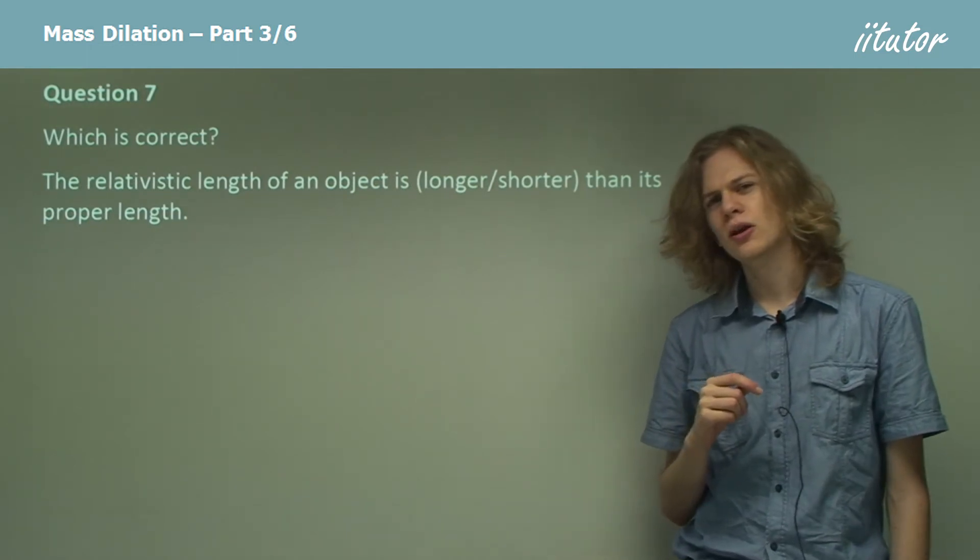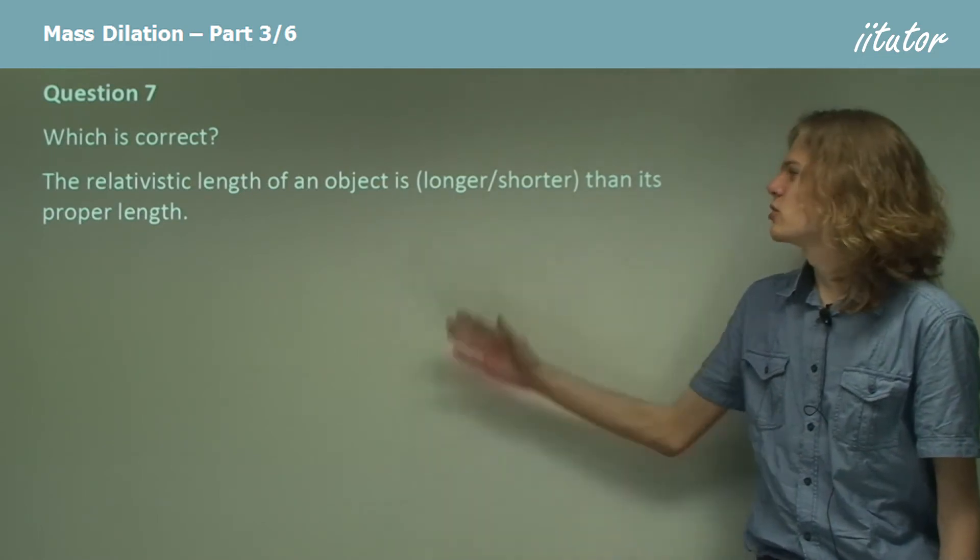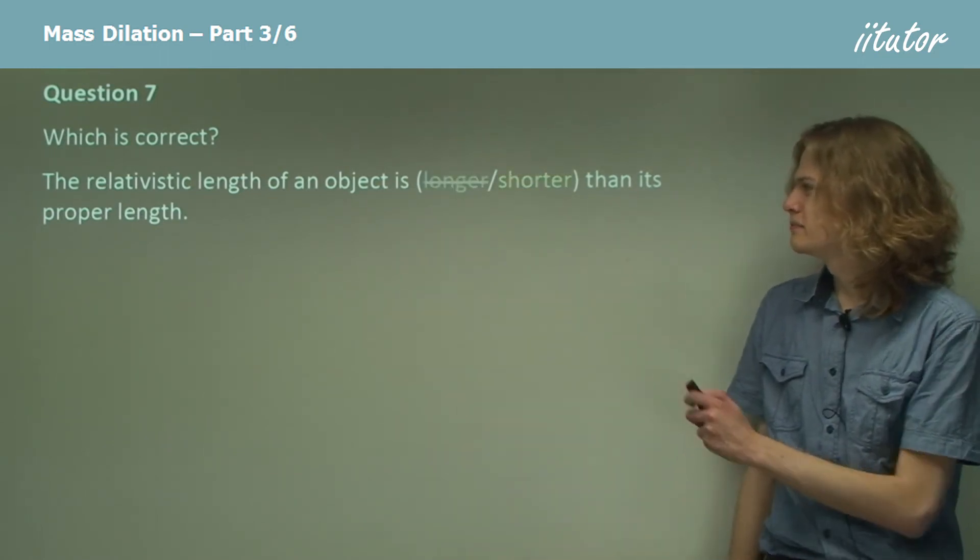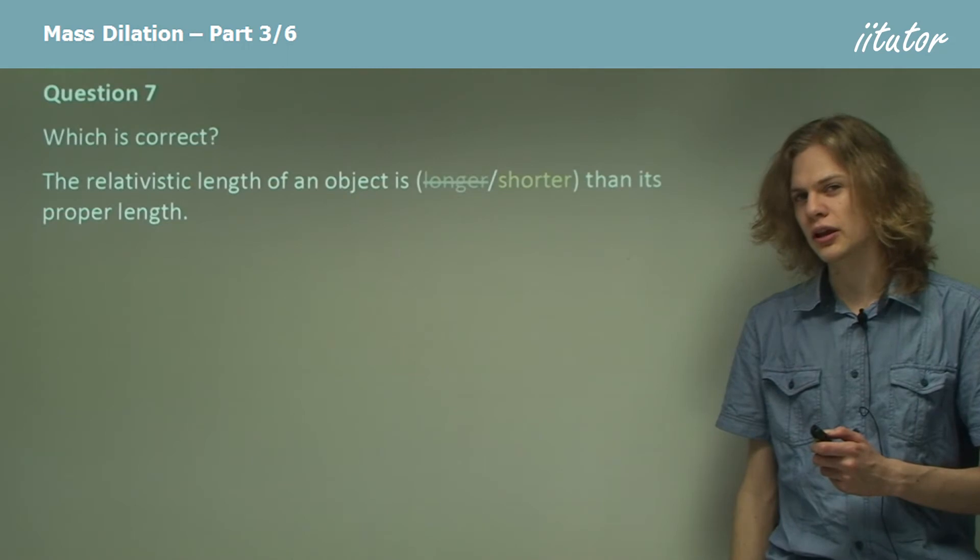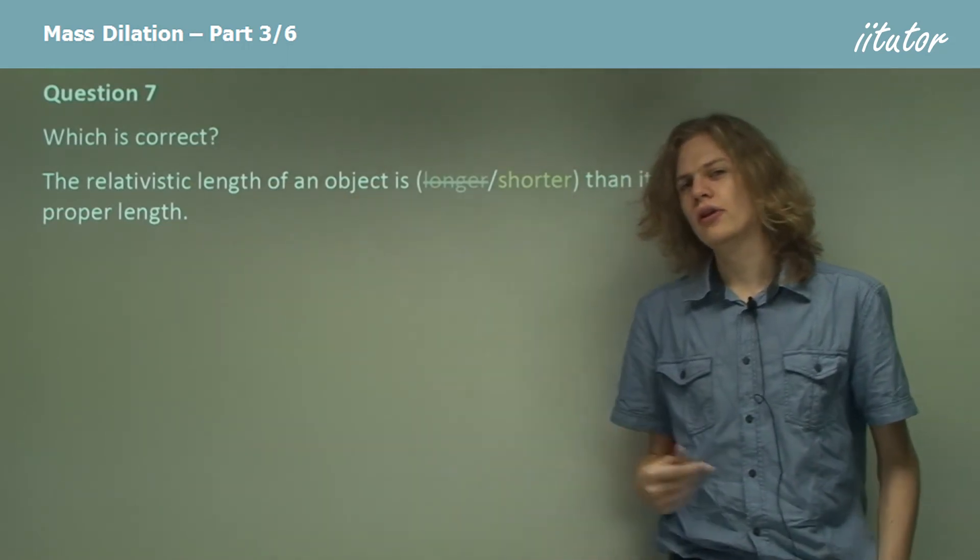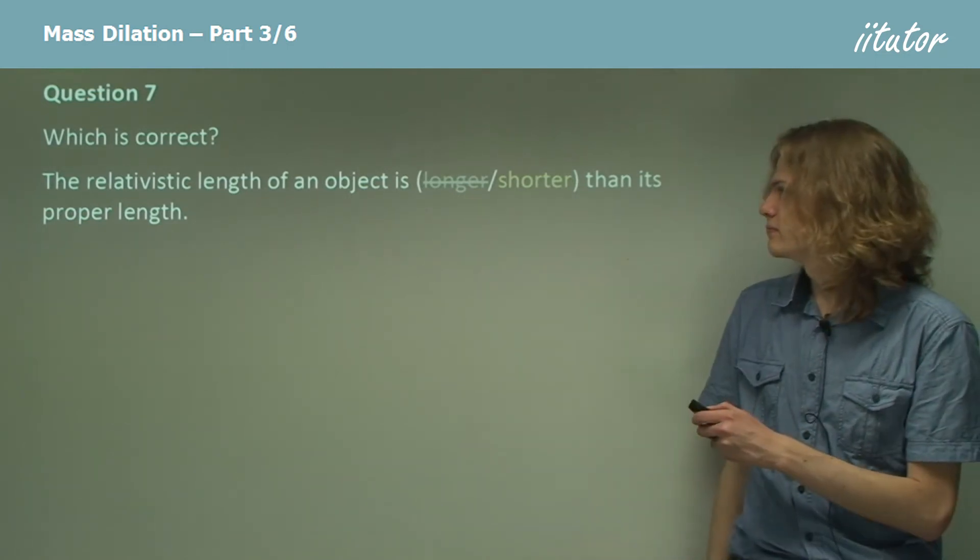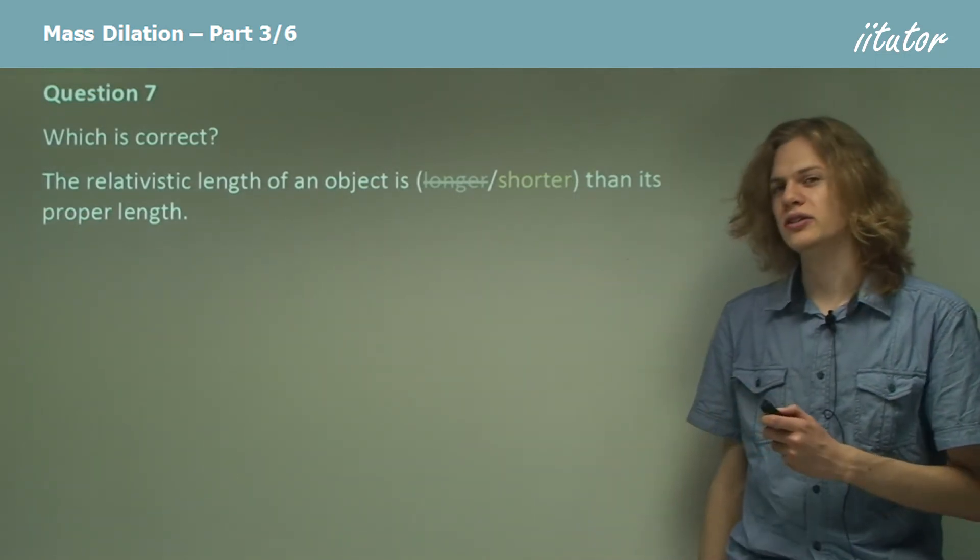Now is it length dilation or length contraction? That's right, it's length contraction. That means the relativistic length is shorter than its proper length. Remember that the proper length of an object is the length of that object when it is not moving. It's also known as the rest length.